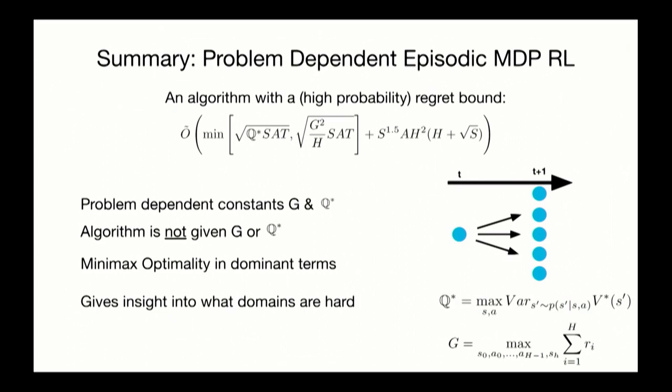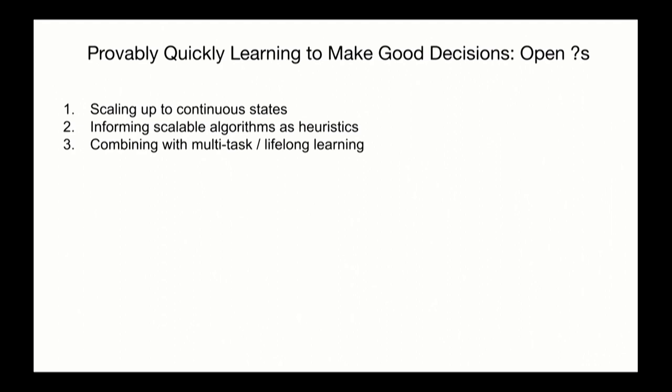To summarize this, I think this work is giving us insights into when is it hard to learn to make good decisions, at least in small tabular cases, and when is it not? And can we have algorithms that are going to adjust to the structure of the domain? There's a huge number of open questions here. We really want to scale up to much more complicated state spaces and complicated dynamics, but I think it's very helpful to sort of build up the foundation so that we understand formally some of the smaller settings before we scale.